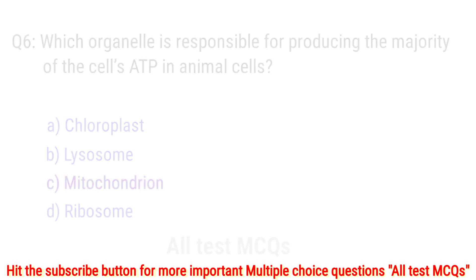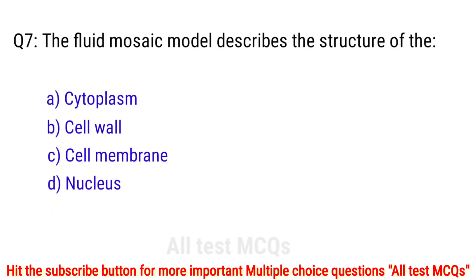Question number 7. The fluid mosaic model describes the structure of the? The right answer is option C: cell membrane.